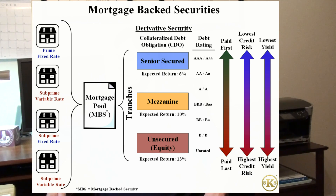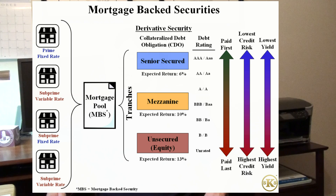During the bubble, a typical mortgage pool would hold loans of varying quality. A single pool would contain prime fixed-rate loans and the most risky subprime variable rate offerings.